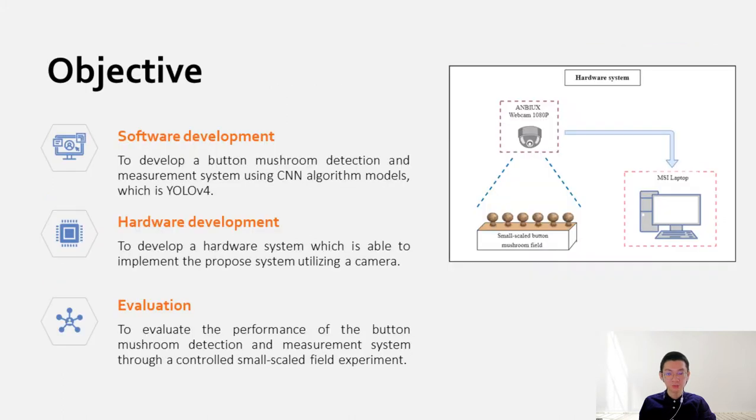The objective of this project is to develop a button mushroom detection and measurement system. The project is divided into three main sections: software development to develop a system using CNN algorithm model YOLO v4, hardware development to develop a hardware system utilizing a camera, and evaluation to evaluate the performance through a controlled small-scale field experiment.